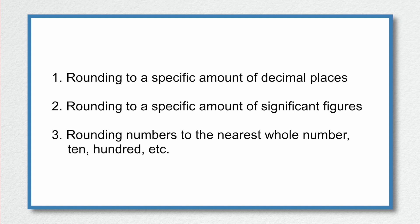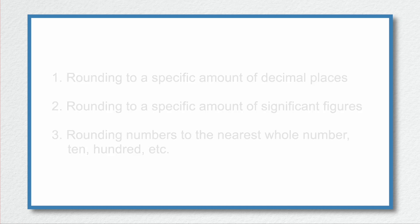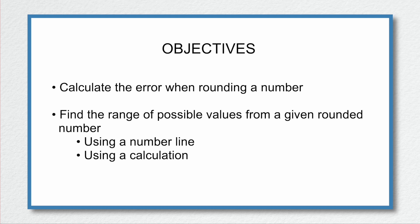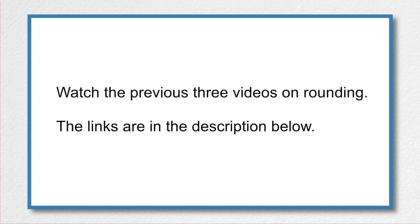When we are rounding in calculations, or when we are just rounding numbers generally, we introduce errors. In this video we are going to calculate the error when rounding a number, and then look at finding a range of values from a given rounded value that the actual value could possibly lie in — both graphically and using a mathematical calculation. It is advised that you watch the previous three videos on rounding before watching this video, as I will be drawing on the mathematics from these.